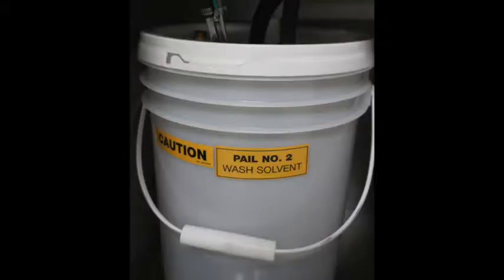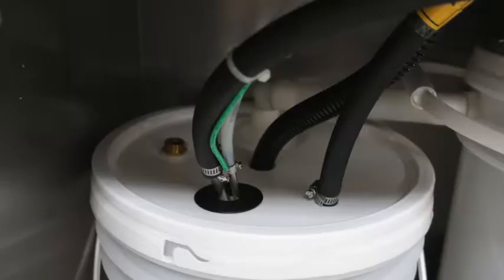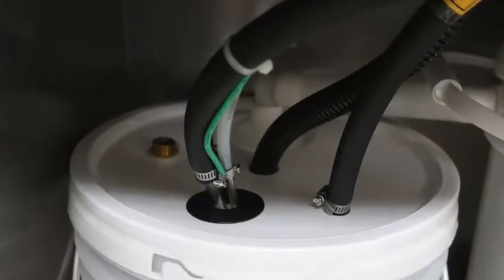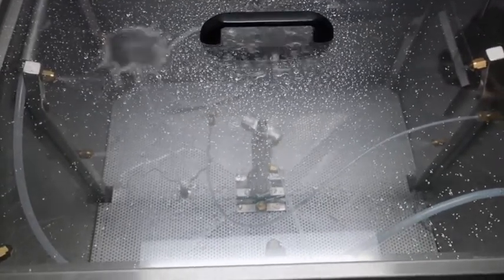Inside the UPP6500D you will find two pails that will hold your solvent for cleaning. The pail on the left labeled the wash pail holds the solvent that cycles through the jets in the wash tank.